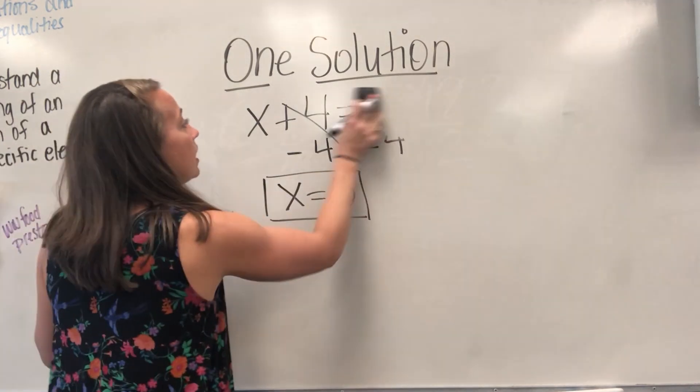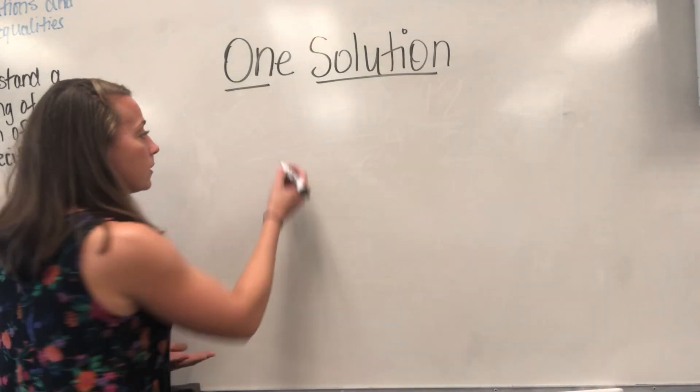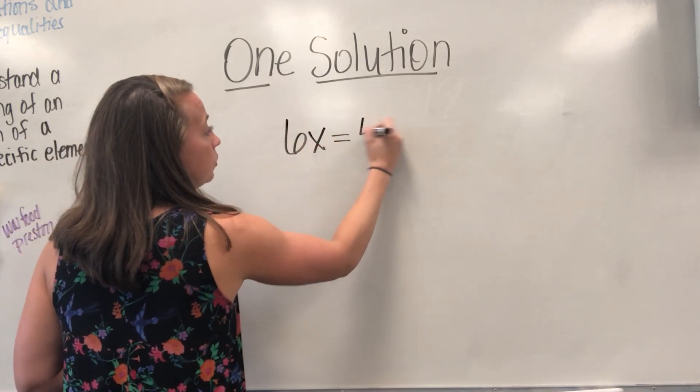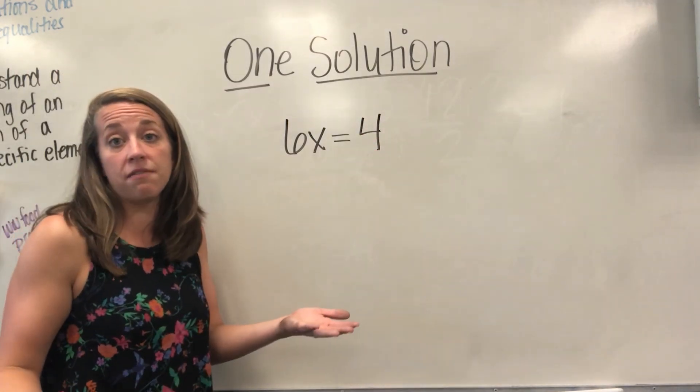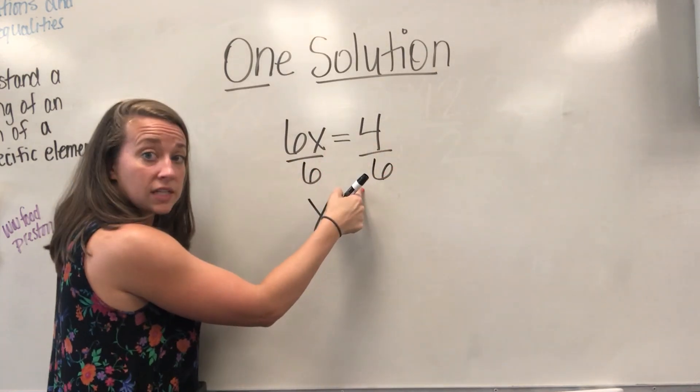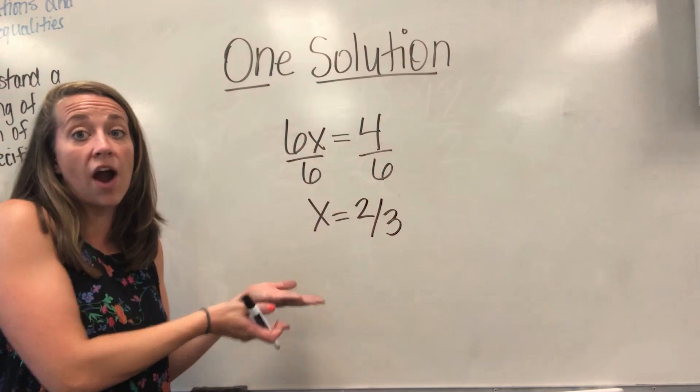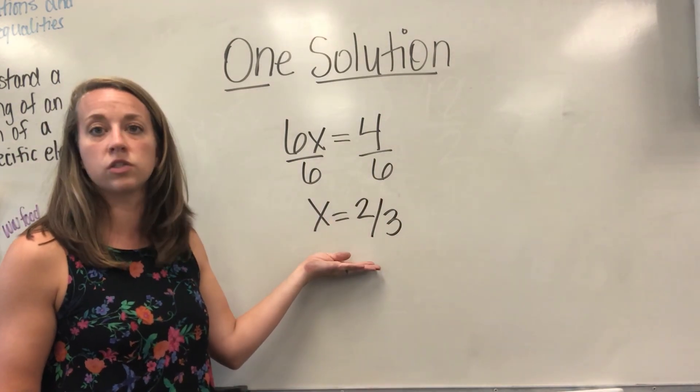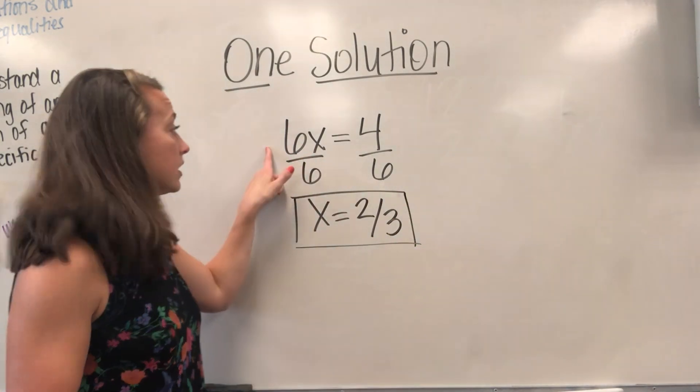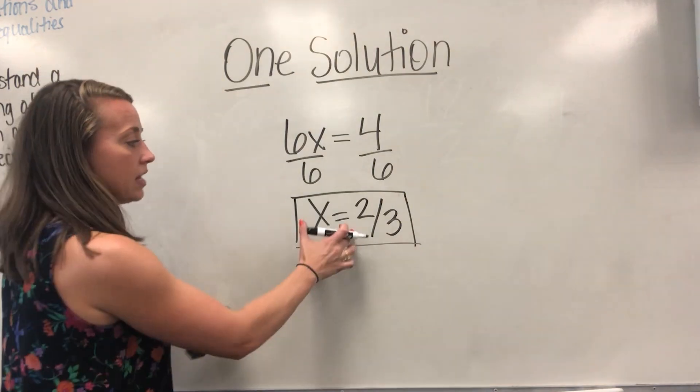Some of the biggest issues that I see are that people get fractional answers and it makes them nervous. There is nothing wrong with a fractional answer. I could say that 6X is equal to 4. If this was my equation, I'm going to solve it like any other equation. I'm going to divide both sides by 6, and I'm going to get X is equal to 4 over 6, which reduces to 2 thirds. This has a solution. The solution happens to be a fraction, but there's nothing wrong with that. It still has one and only one solution.